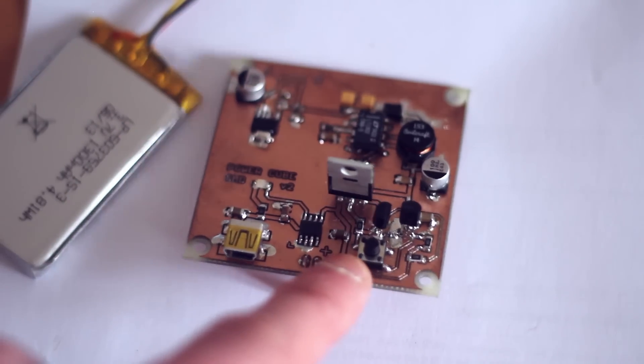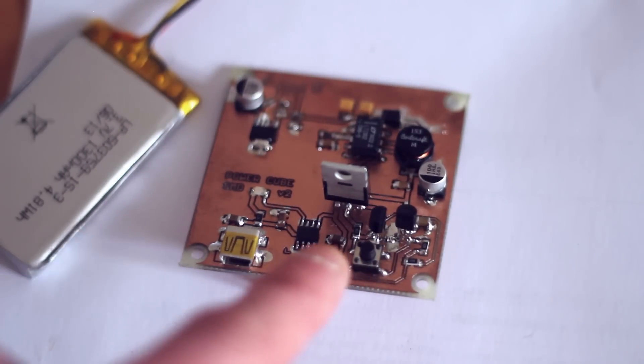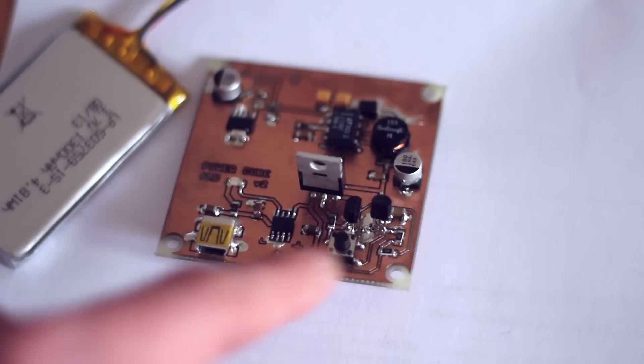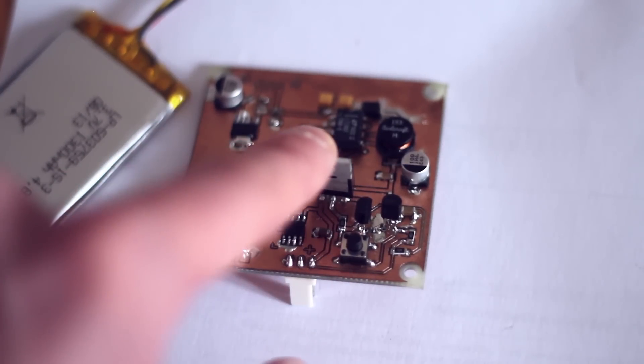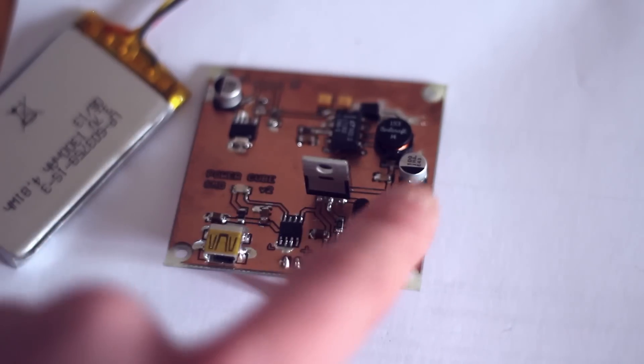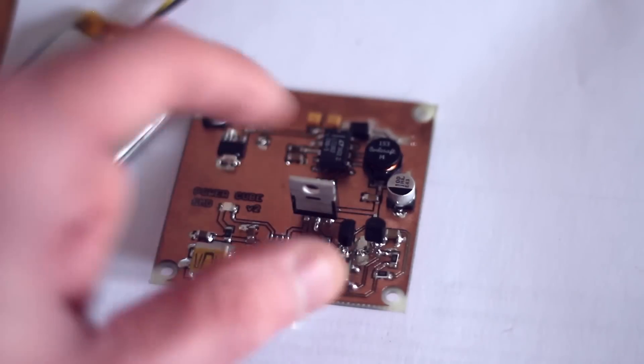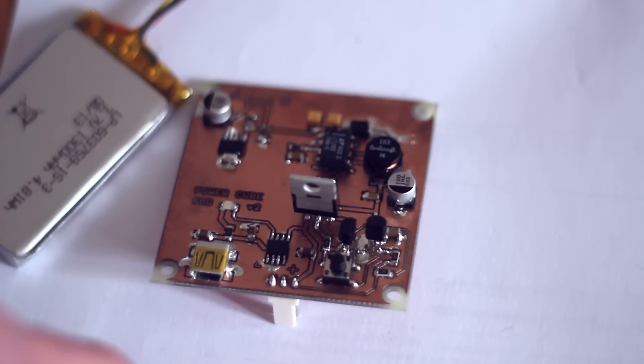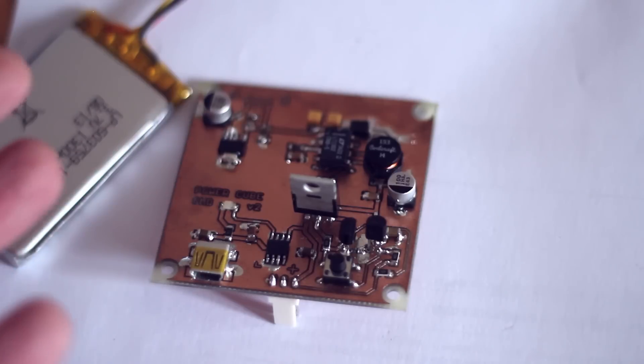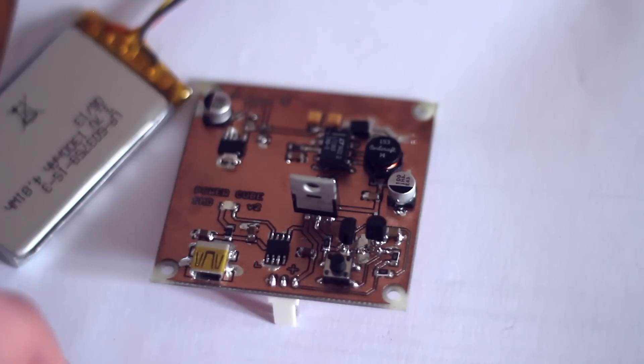Here we have the circuit that doesn't particularly work, which is a single momentary button, which should latch the circuit on and off using this MOSFET here and these transistors there. Now, it doesn't work, unfortunately. It does turn the circuit on, but it won't turn off. It may be because I've not attached a proper load to this yet. So when it is under load, the capacitance that's in that circuit should discharge and not keep it going, I imagine. But that's a bit of a guess.